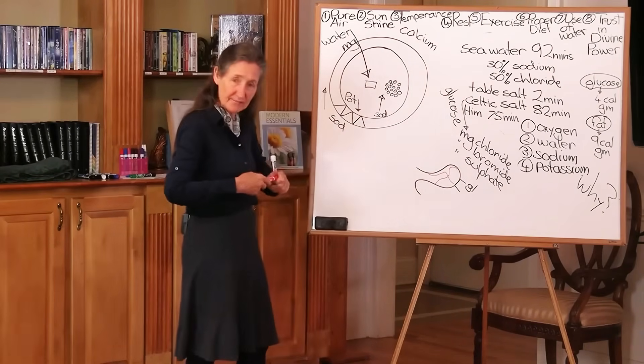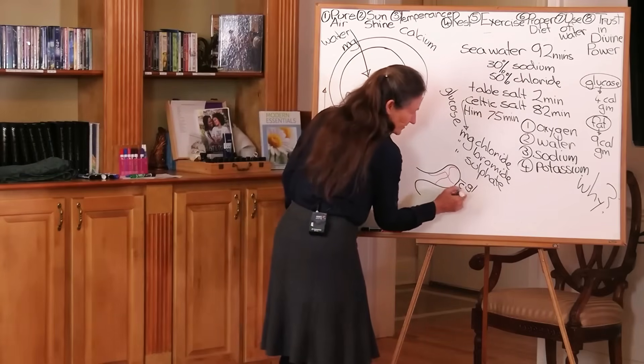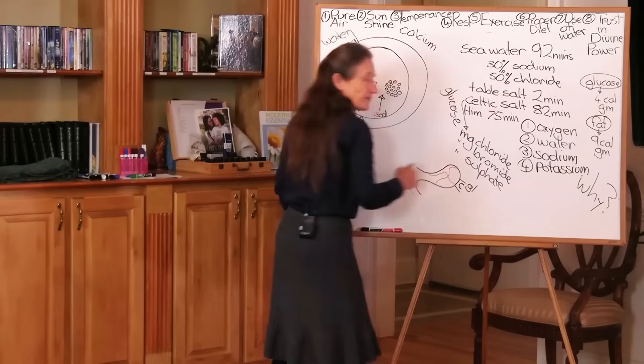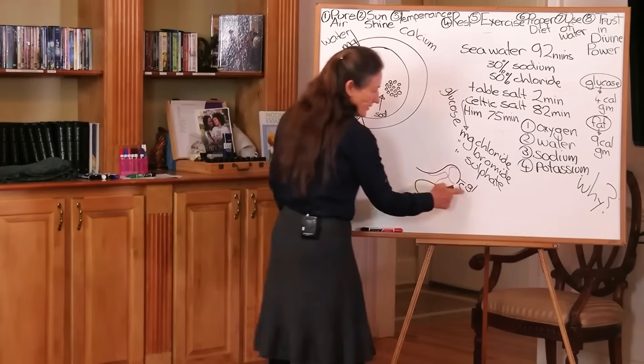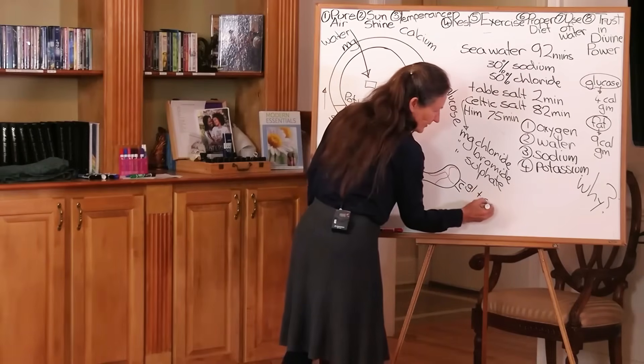Now in that receptor site is a carrier, and this carrier is designed to take the glucose through to the blood. But the carrier will not accept the glucose unless it comes with a molecule of sodium.